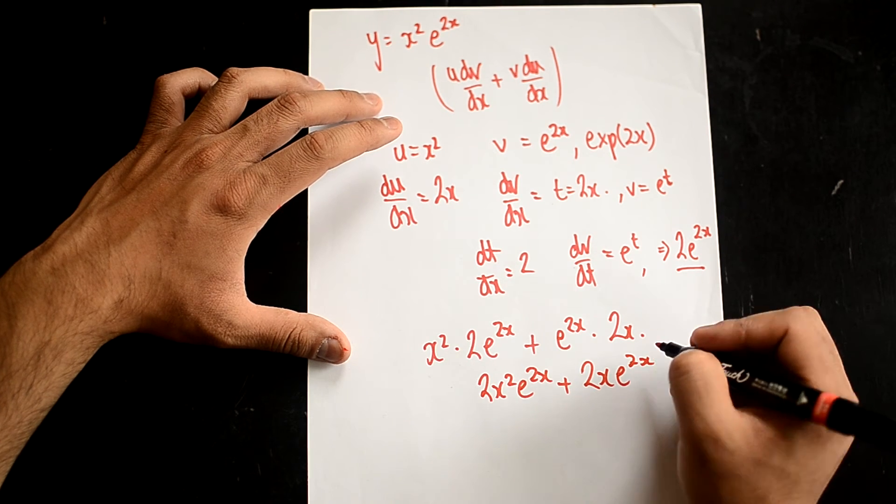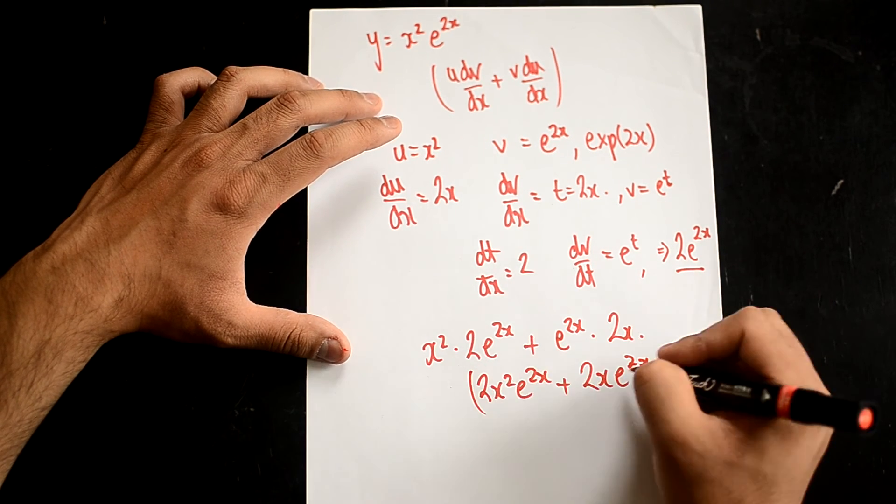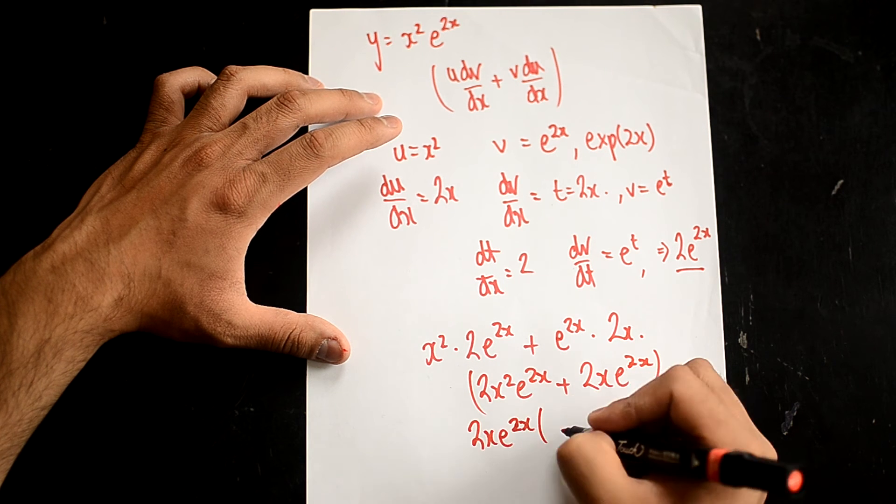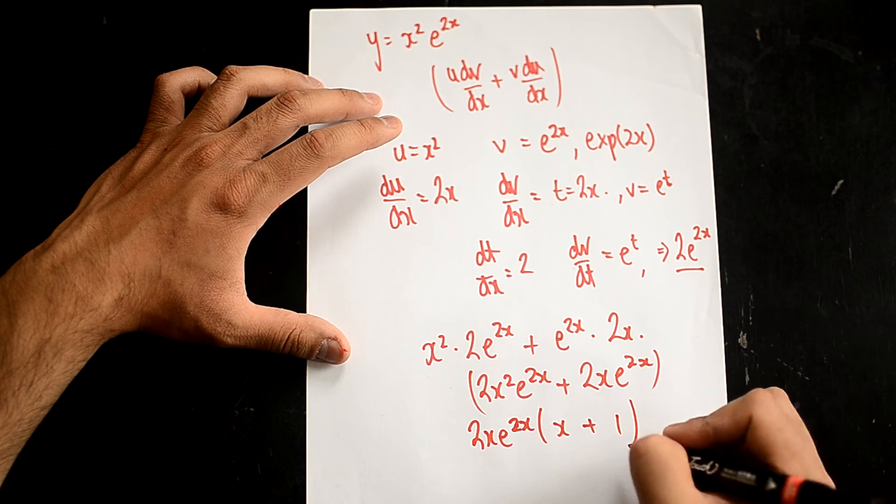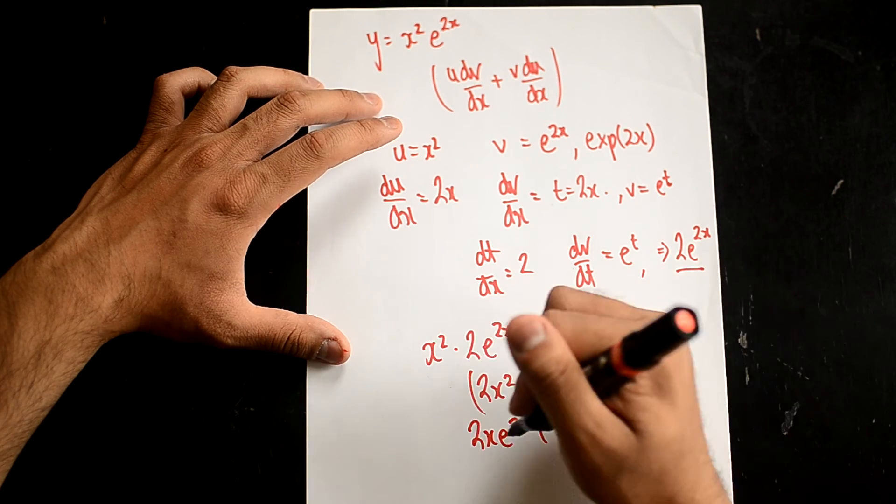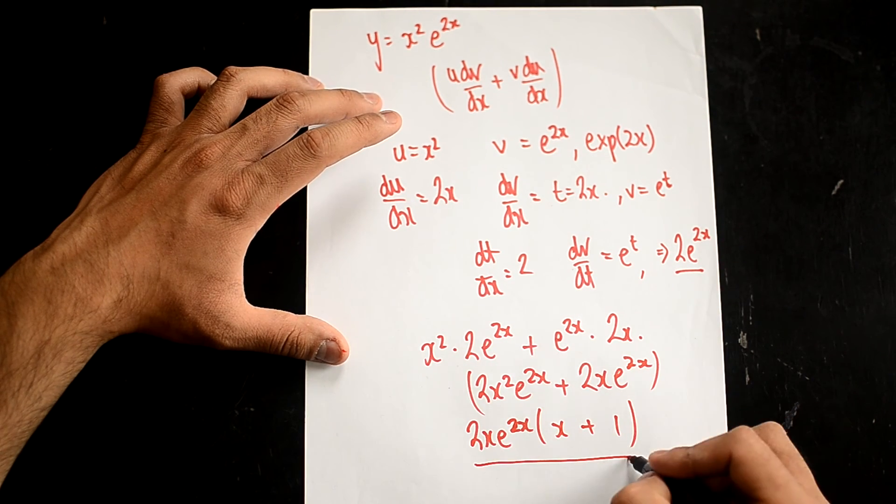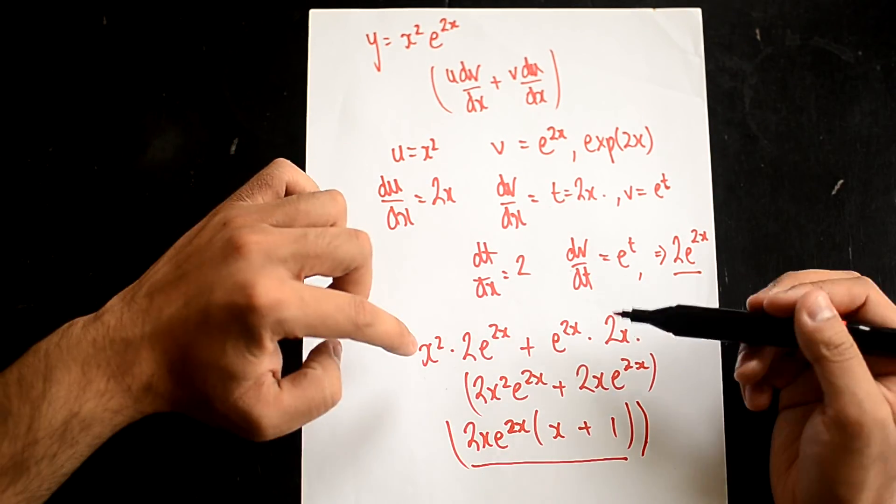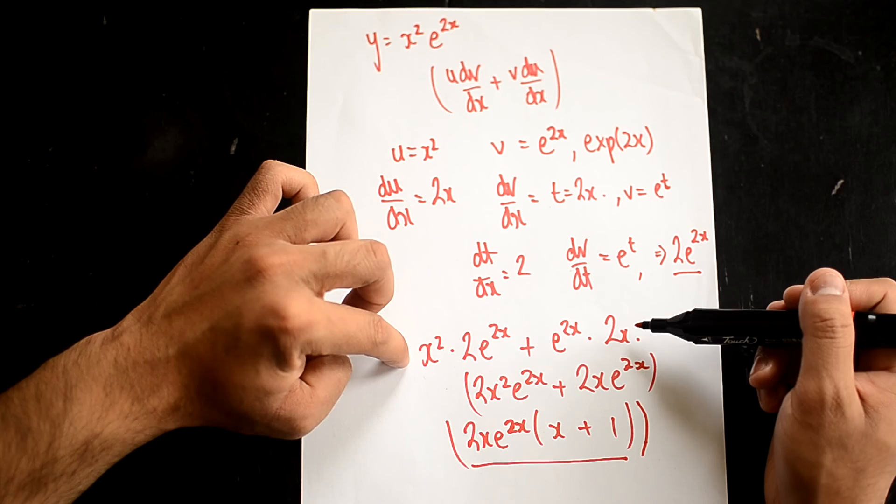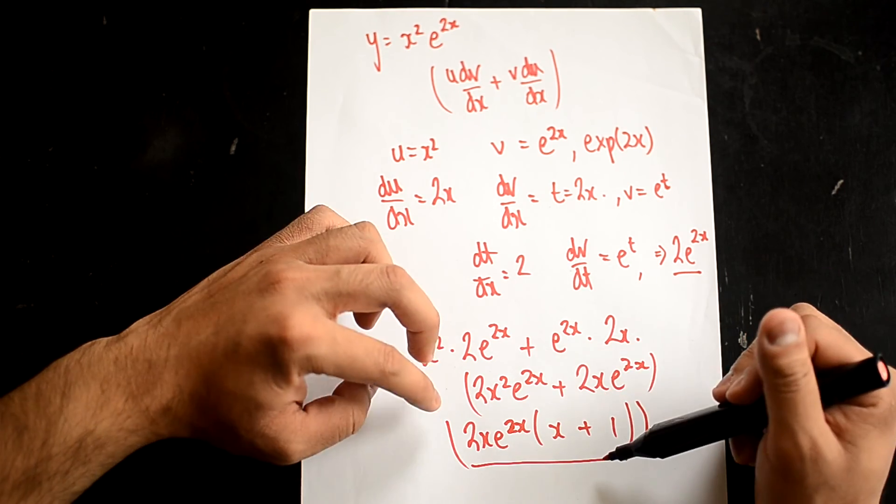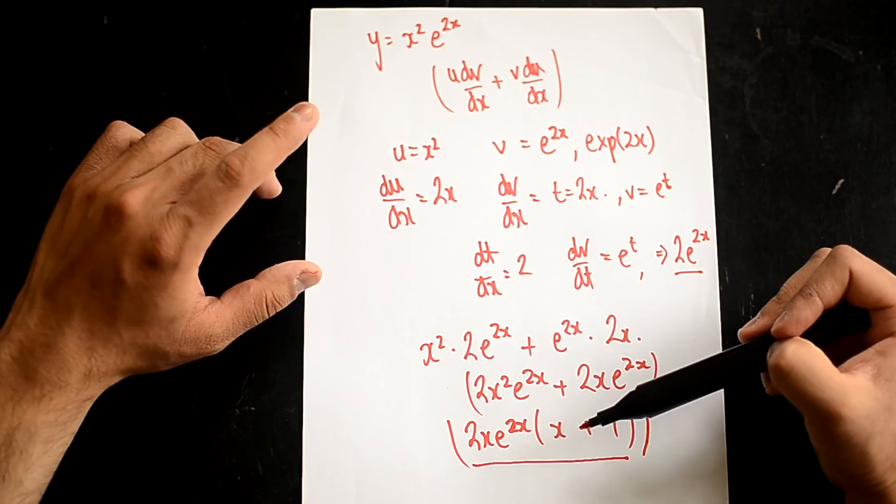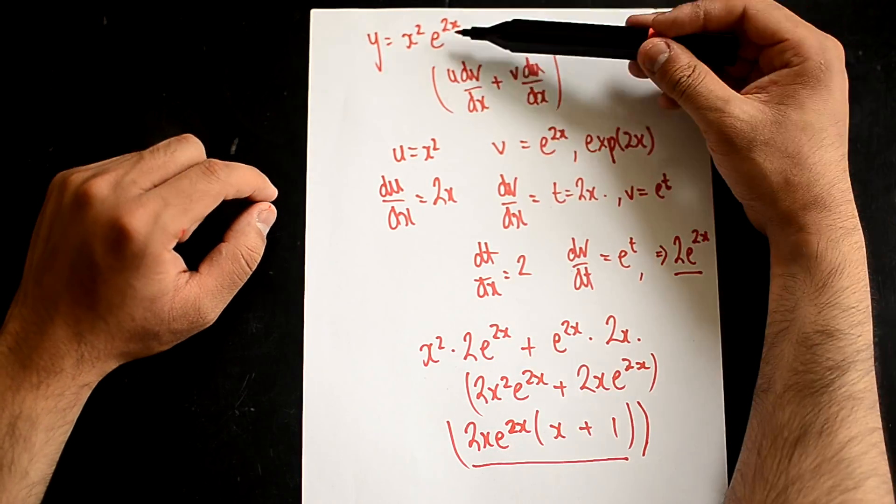So, actually, you can simplify that again by putting up 2x e to the 2x times (x plus 1). Yep, there we go. So, that would be my answer. I think in some papers that could be left as your final answer. Sometimes you might get one extra mark if you put it into its simplest form. But this is the differential of that.